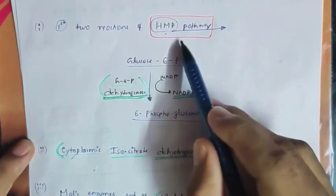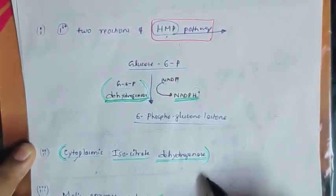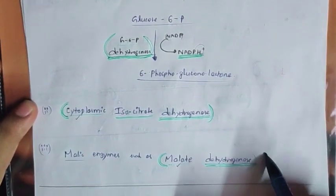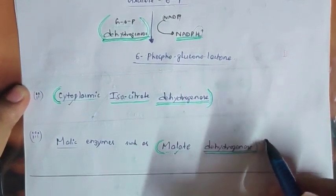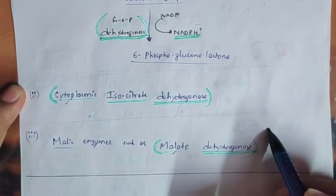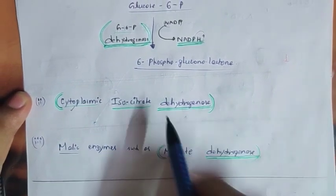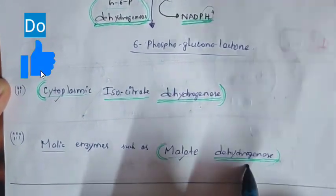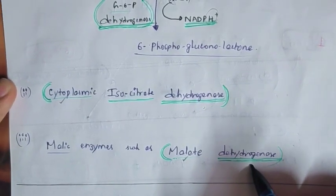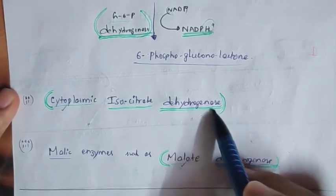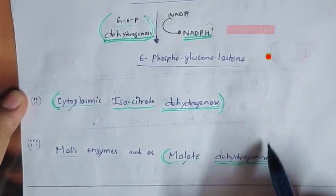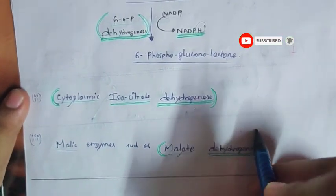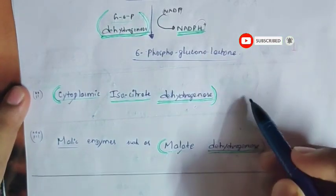The first two reactions of the HMP pathway are the main examples. Additionally, cytoplasmic Isocitrate Dehydrogenase and Malic enzyme (Malate Dehydrogenase) are examples where NADP is converted to NADPH. These are slightly controversial in terms of which pathway they belong to — check your textbooks, and you can message if you know the answer.